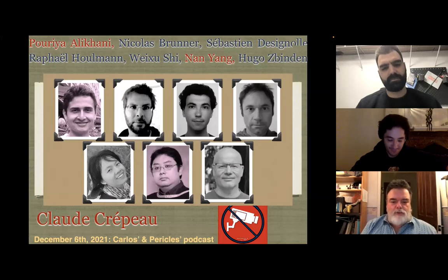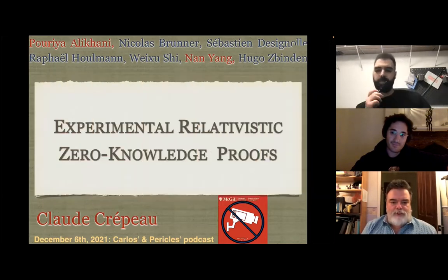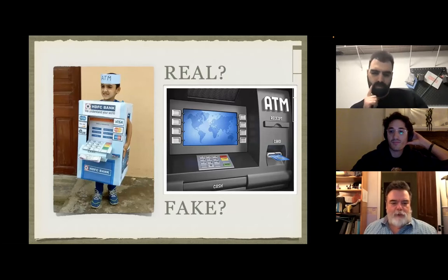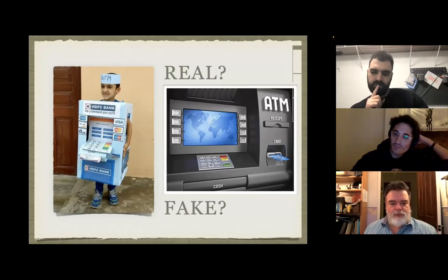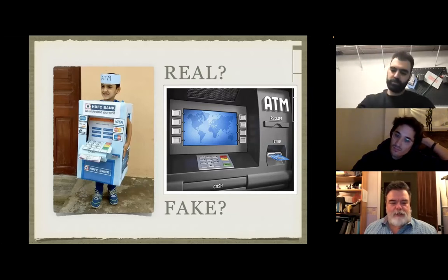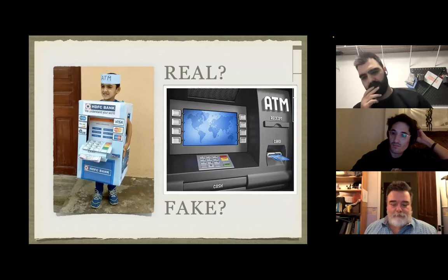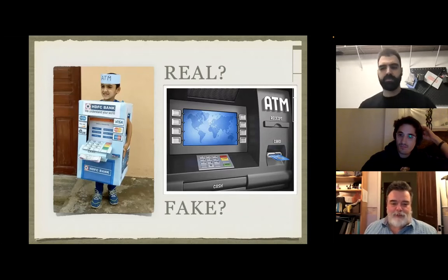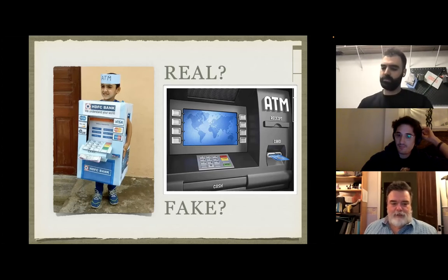I'm going to introduce a real-life problem: how can you tell if you go to a teller machine to withdraw money whether you're interacting with a real one or a fake one? In particular, when you have to type in your PIN — your personal identification number — how do you know the teller machine won't memorize it and just store your PIN, use it later with a fake of your card, and withdraw money from your account? You never know. It's a very unsafe mechanism because we have to give away our secret information — the PIN code — and whoever receives it could store and use it later.